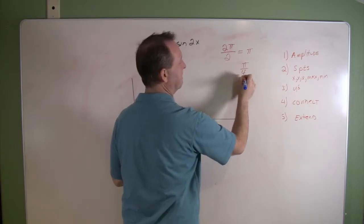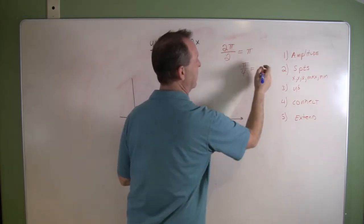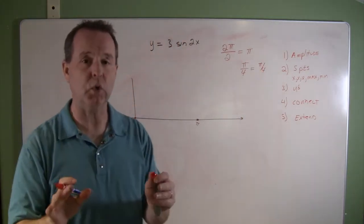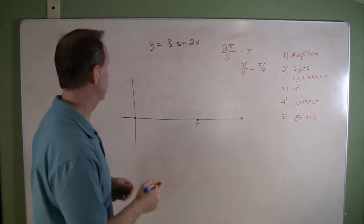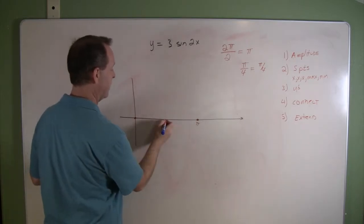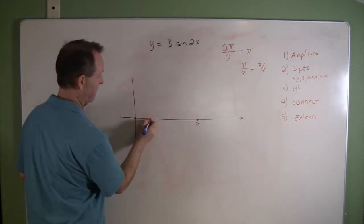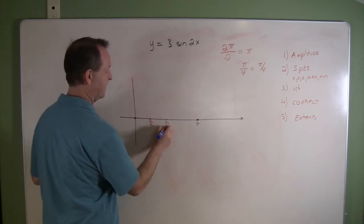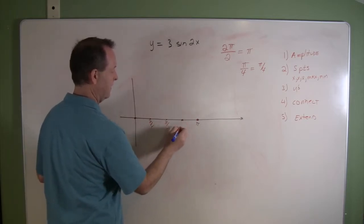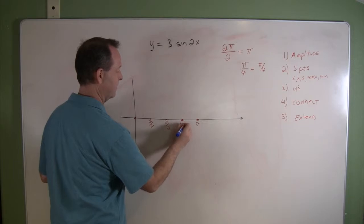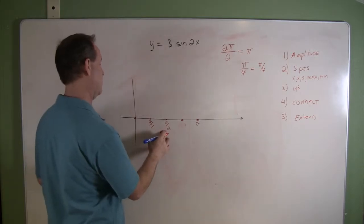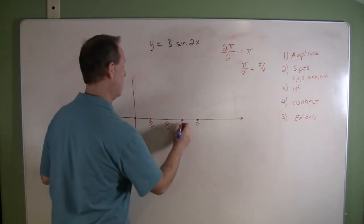So something cool is happening every π/4. So let's go ahead and do that. I have a π/4 there, then I have a π/2, then that gives me 3π/4, and then a π.